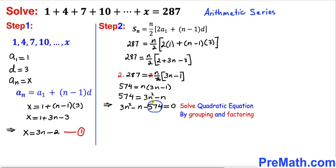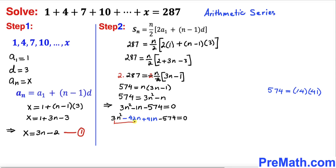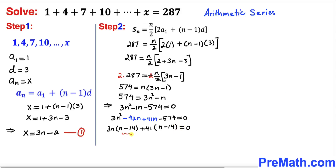Looking at the constant 574, it can be broken down as 14 times 41. This gives us a clue: the middle term negative n can be rewritten as negative 42n plus 41n. We can factor 3n from the first two terms and 41 from the last two terms, giving us 3n times n minus 14, plus 41 times n minus 14 equals 0.